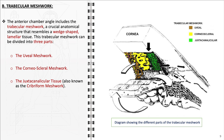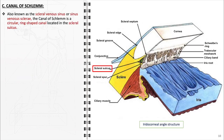The primary function of the trabecular meshwork is to facilitate the drainage of aqueous humor from the anterior chamber into Schlem's canal and eventually into the venous system. Dysfunctional trabecular meshwork can lead to increased eye pressure, contributing to conditions like glaucoma. The canal of Schlem, also known as the scleral venous sinus or sinus venosus scleri, is a circular, ring-shaped canal uniquely situated in the scleral sulcus, at the junction where the transparent cornea meets the opaque sclera, near the limbus of the eye. This canal encircles the iris, forming part of the drainage angle of the eye.